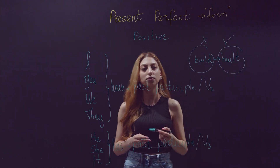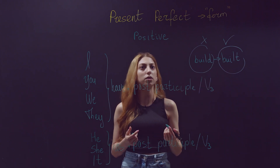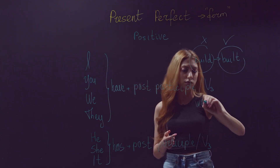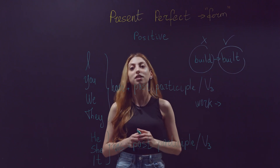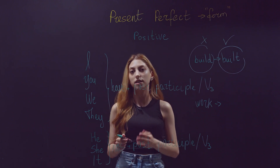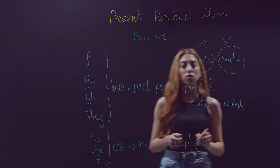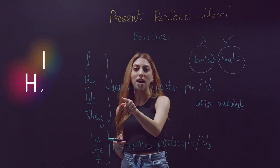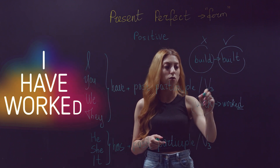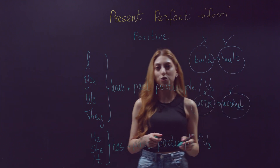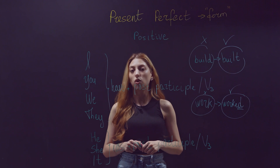What if our verb is not irregular — it's regular? For example, 'work'. In this case I'm going to add -ed to the end of the verb, so it will be 'worked'. I don't say 'I have work' but 'I have worked'. 'I have work' is the wrong version and 'I have worked' is the right version.